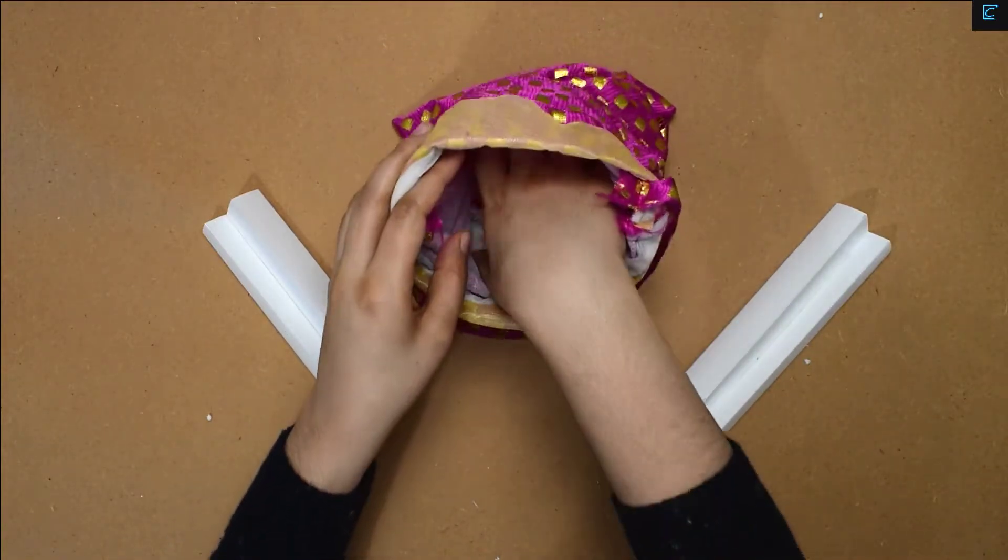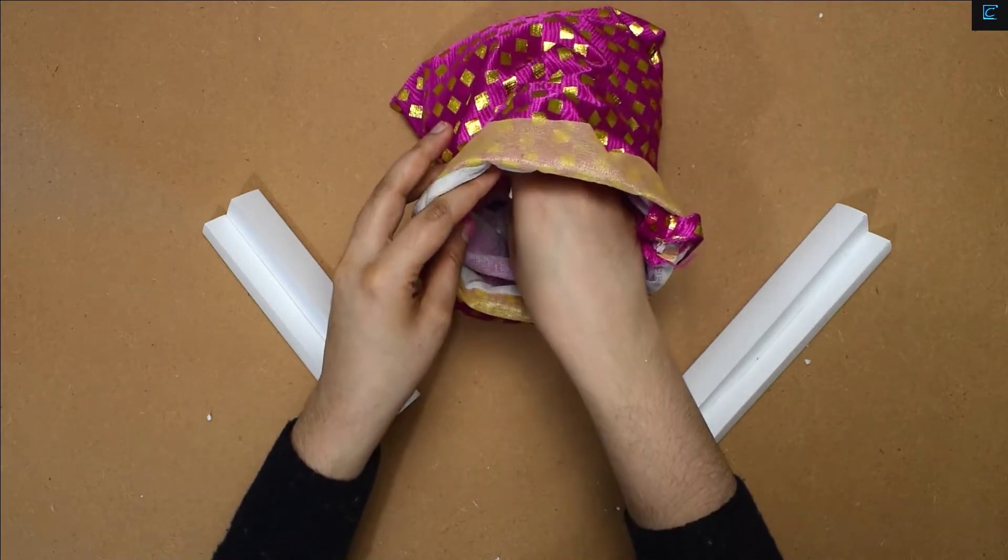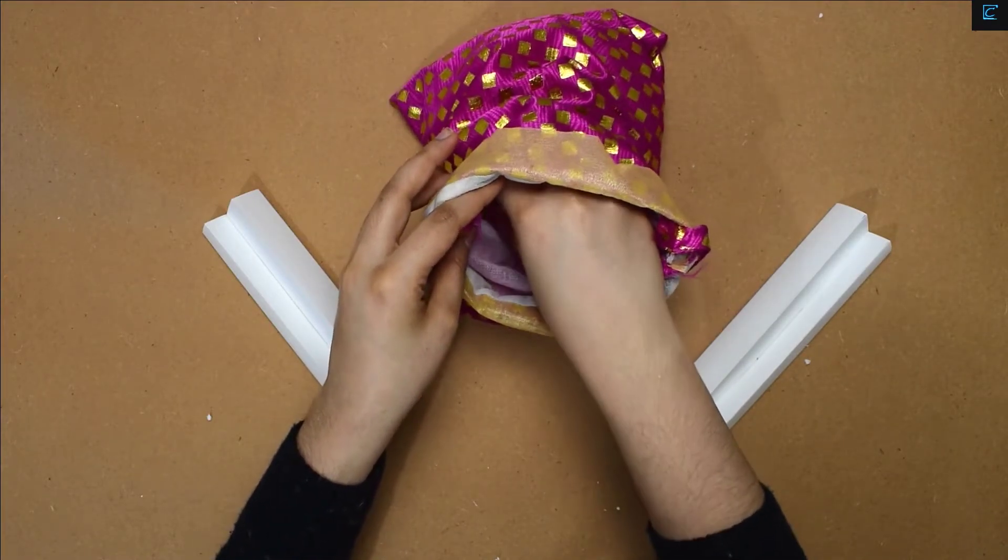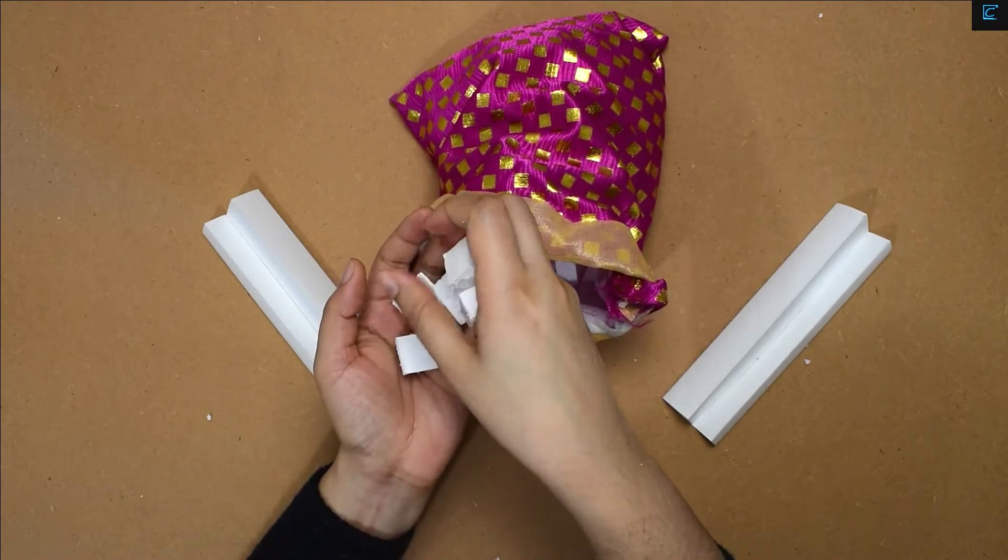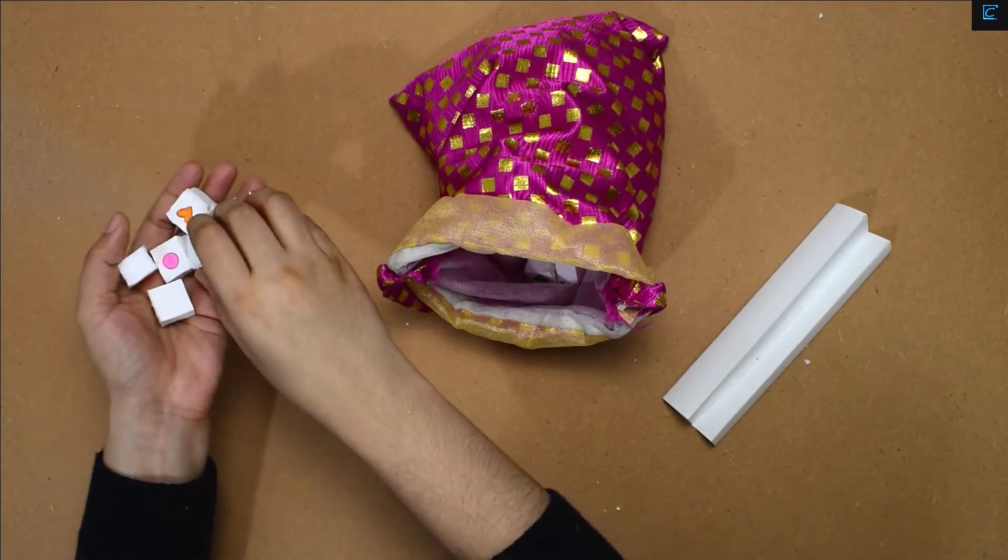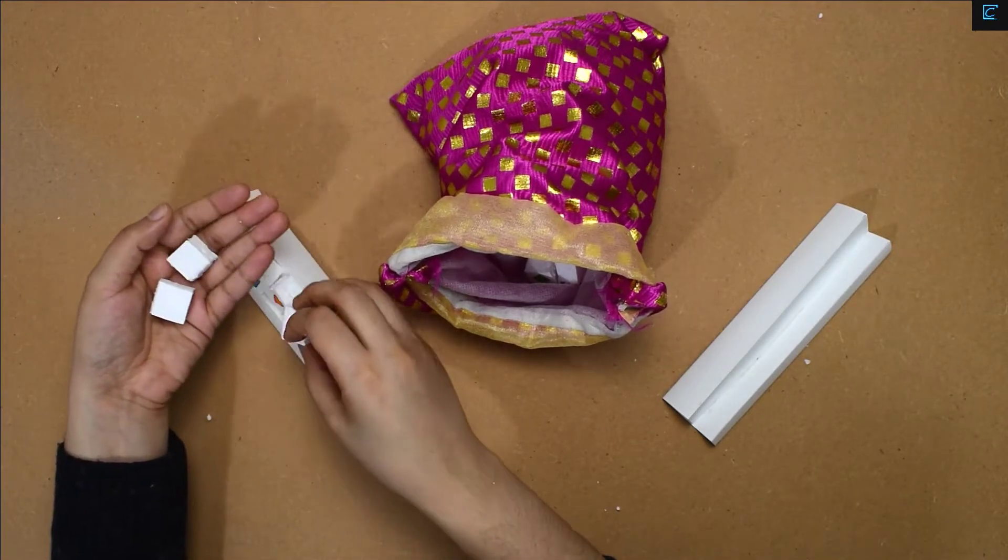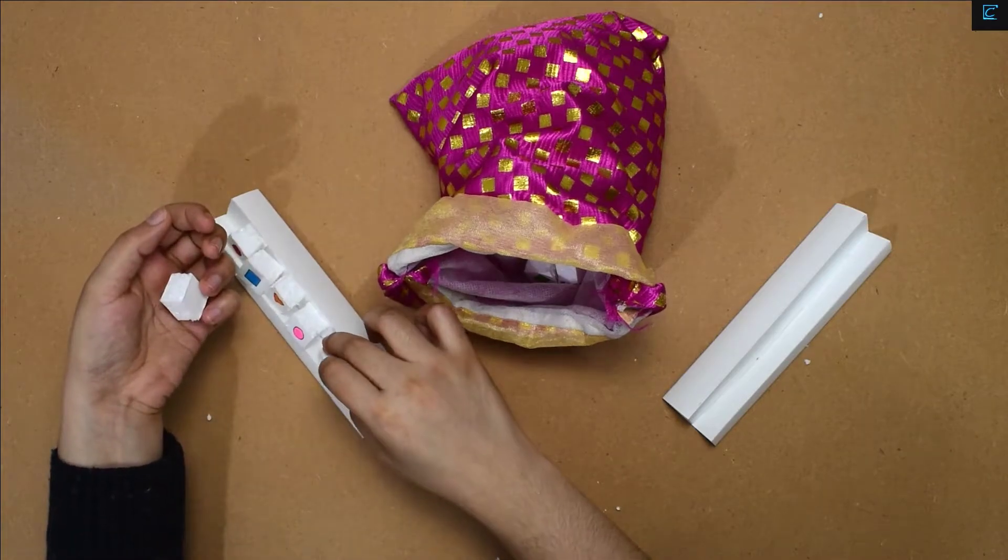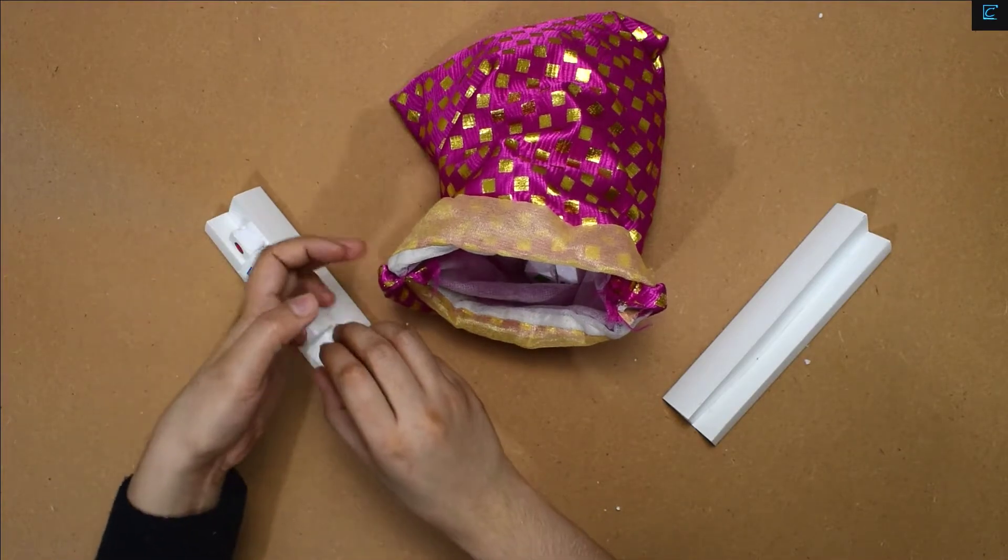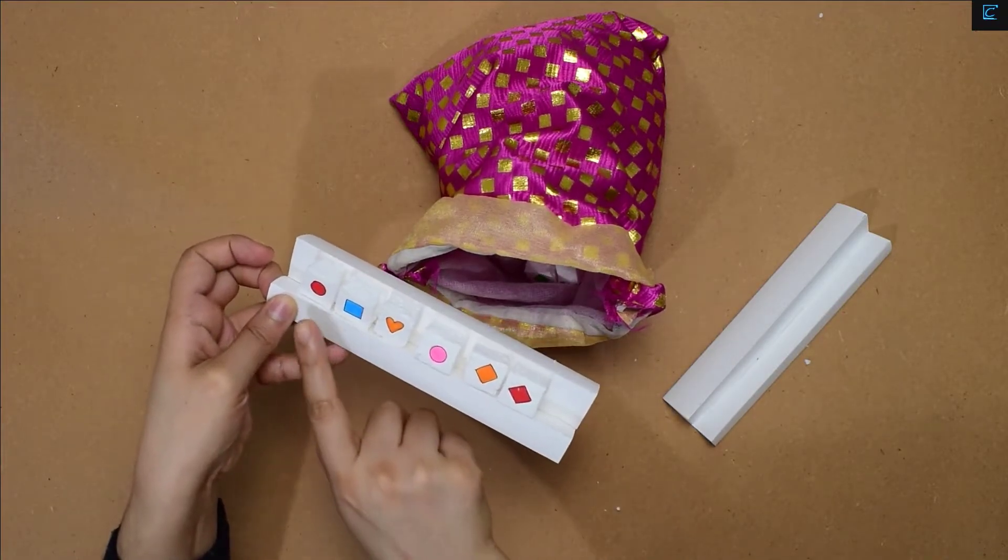The game begins with all the tiles being placed in the bag and mixed thoroughly. Each player then randomly draws six tiles and keeps it secretly from their opponents. The tiles come with different shapes and colors, so you will have six tiles of random color and random shape.